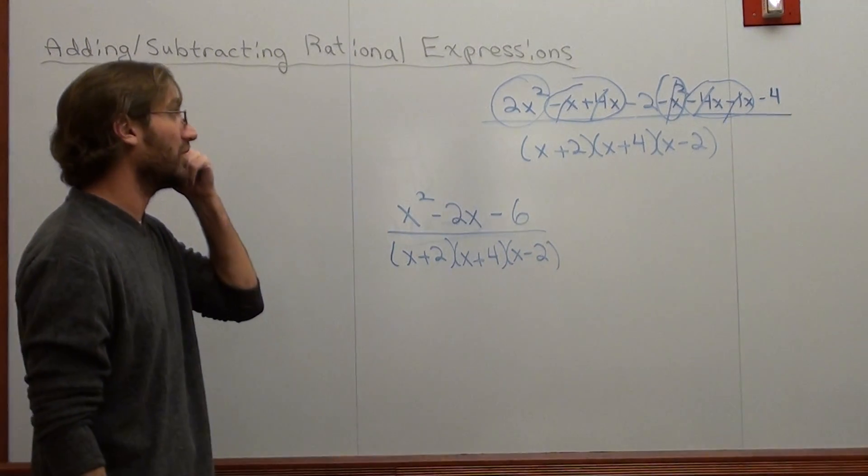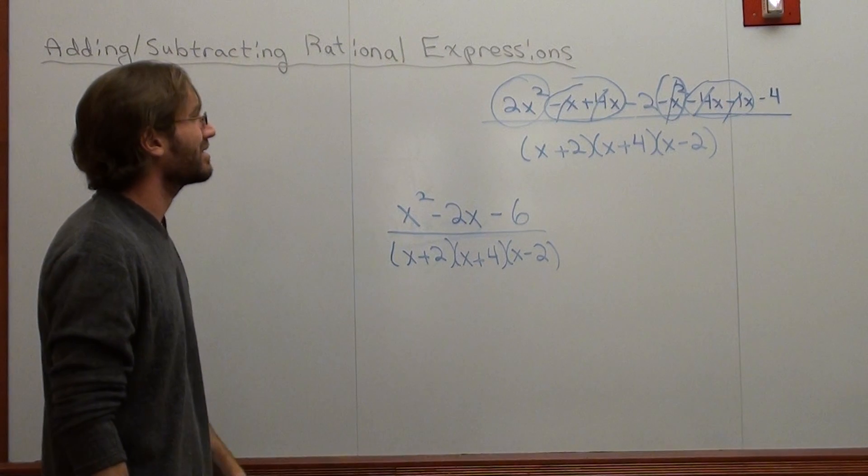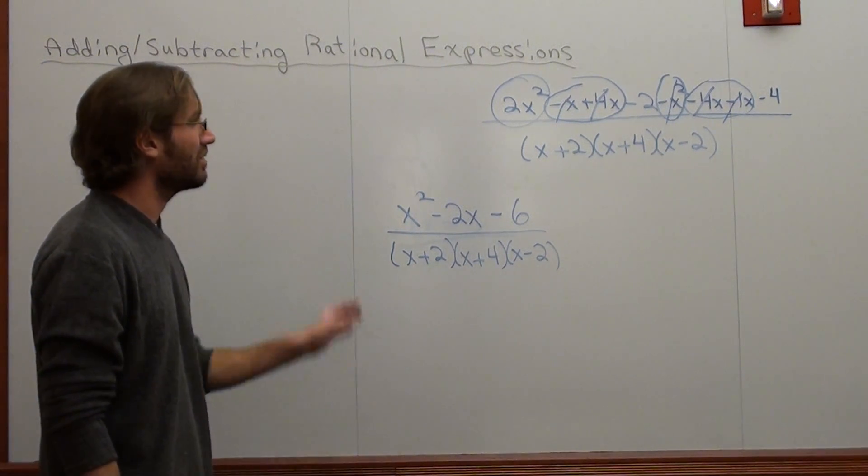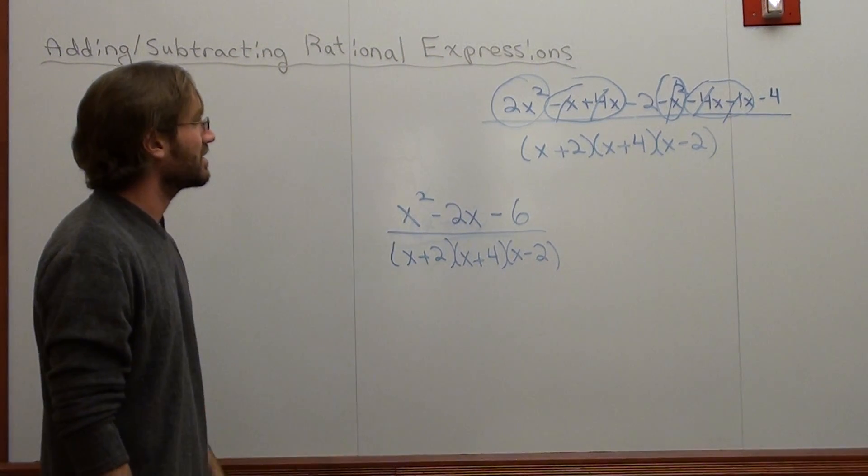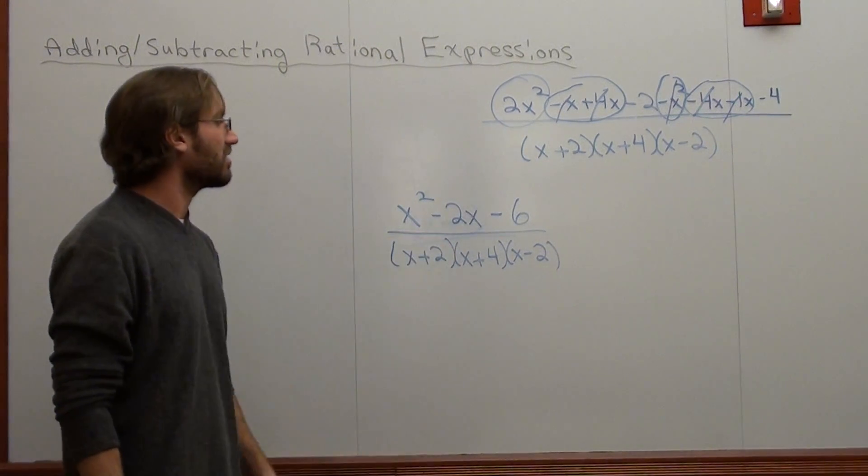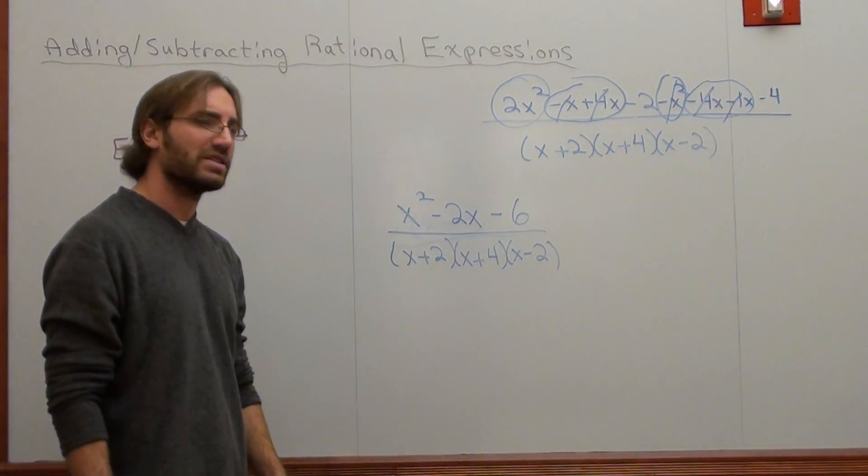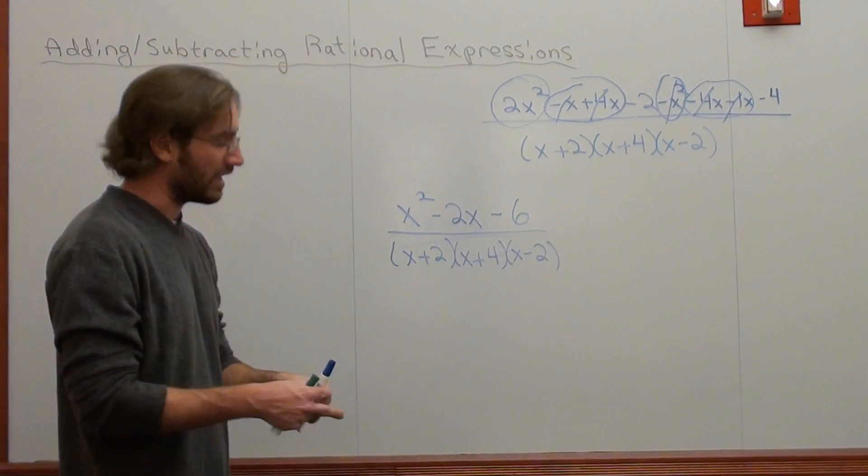And then negative 2 subtract 4 is negative 6. So that's what I have: x squared subtract 2x subtract 6 over that. I can't factor x squared subtract 2x subtract 6, so I'm done. That's my answer.